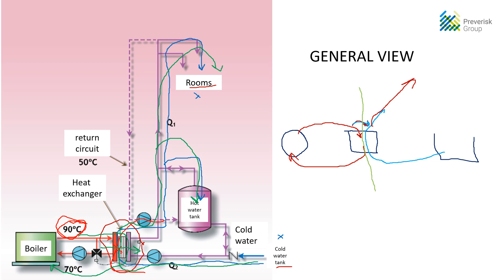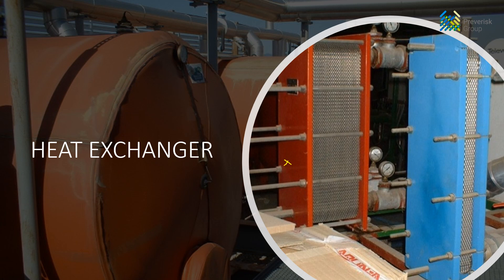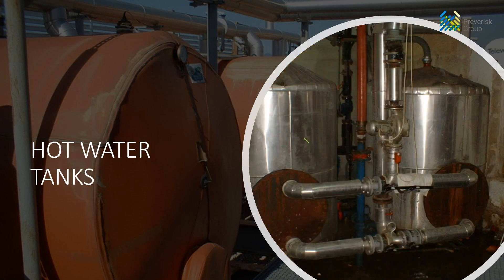In the boiler loop system, water is not used by the clients or guests. This water is only used to carry energy from the boiler to the heat exchanger. The water that is used by the guests is on the other side of this system. These are boilers that use gas as a fuel. You can also see two heat exchangers, and here is an example of hot water tanks — two hot water tanks.